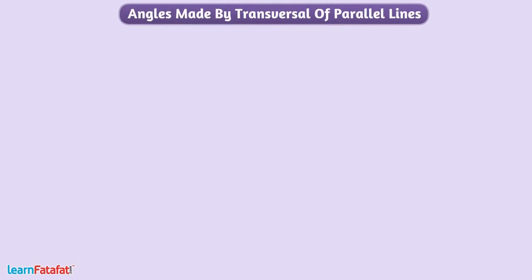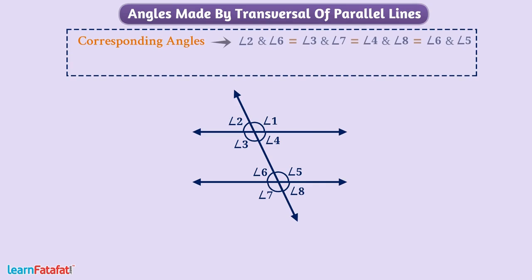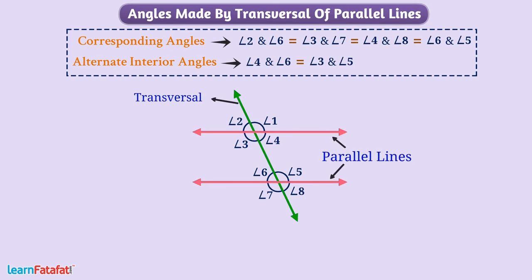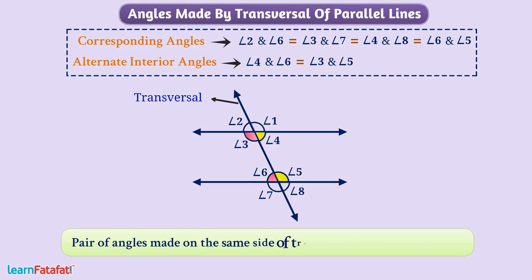You already know about angles made by transversal of parallel lines. Let's recall it! The corresponding angles and alternate interior angles made by transversal of parallel lines are equal, as well as the pair of angles made on the same side of transversal are supplementary.